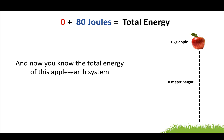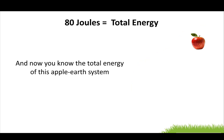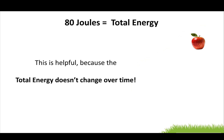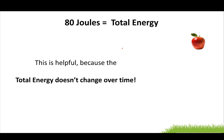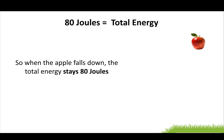Now you know the total energy of this apple-Earth system: 80 joules. This is helpful because the total energy doesn't change over time. If I know the total energy at one time, I can use that knowledge to figure out things at another time. When the apple falls throughout its entire trip, the total energy stays at exactly 80 joules — it doesn't change.